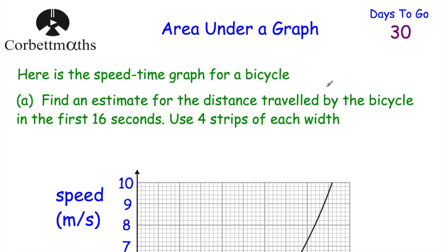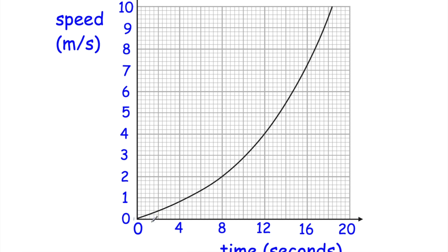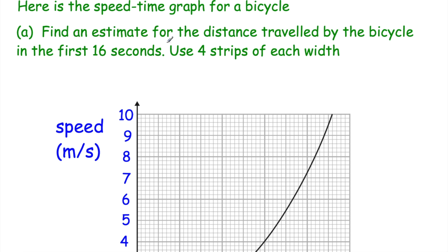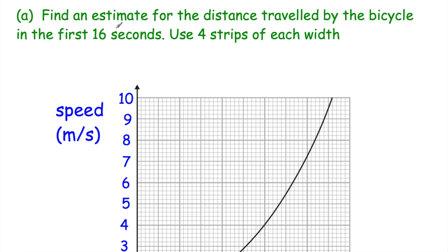Here's a speed-time graph for a bicycle. We've got time from 0 to 20 seconds, and the speed goes up as time increases, starting from 0 and going up to 10 metres per second. Part A says: find an estimate for the distance travelled by the bicycle in the first 16 seconds, using four strips of equal width. So we take 16 seconds divided by 4, which gives us 4 — meaning each strip is 4 seconds wide.